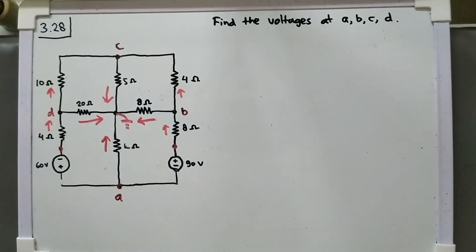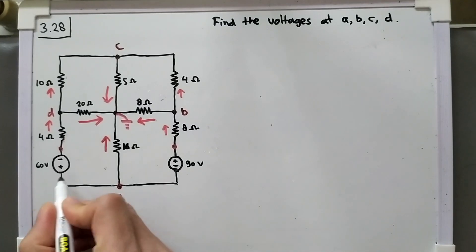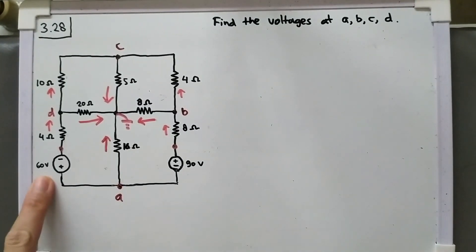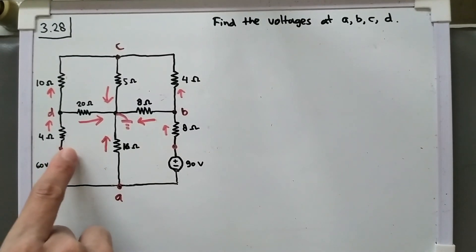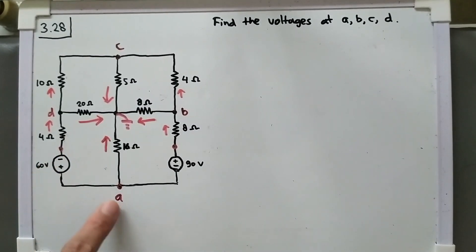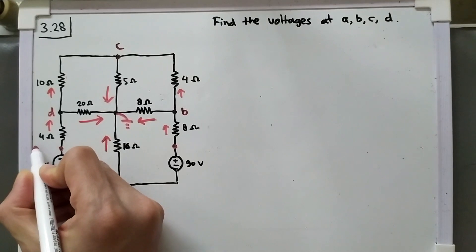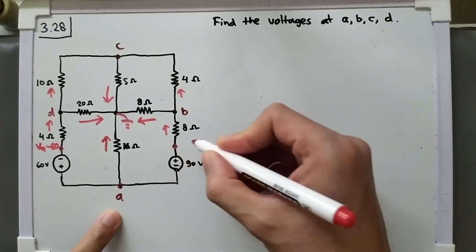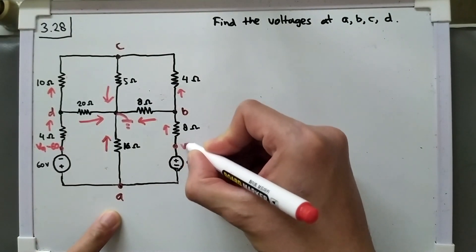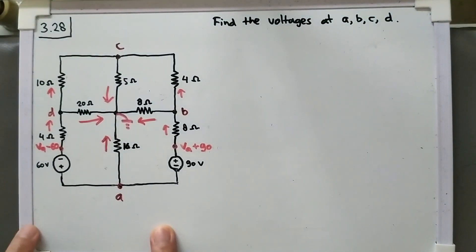This is a 16 ohm resistor, and this is a voltage source. The difference between this point and this point should be 60 volts, but the positive terminal is here, so A has to be higher than this point — therefore this point is VA minus 60. And for this point, it must be 90 volts higher than VA, so VA plus 90. We now have all the nodes set up.